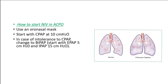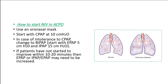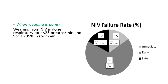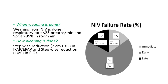In case of intolerance to CPAP, change to BiPAP: start with EPAP 5 cm H2O and IPAP 15 cm H2O. If patients have not started to improve within 10–20 minutes, then EPAP or IPAP may need to be increased. Expect maximal benefit after 1 hour. Weaning from NIV is done if respiratory rate is less than 25 breaths per minute and SpO2 is greater than 95% in room air. Stepwise reduction of 2 cm H2O in IPAP and EPAP.